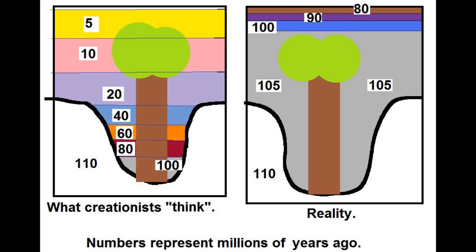Polystrate fossils are trees that are found going through several layers or strata in the fossil record. They're completely fossilized and vertical. Creationists claim that if these layers are of different dates — millions of years — then that would require these trees being exposed upright for millions of years, and the chance of them fossilizing as they are would be slim to none. And they're absolutely right.